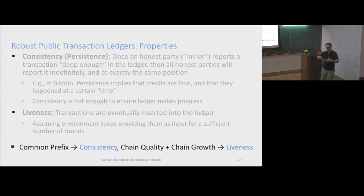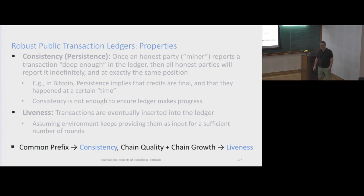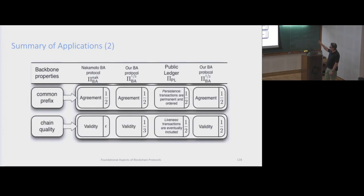This is how we specify the distributed ledger. We can show that consistency follows from common prefix and liveness follows from chain growth and chain quality. Chain growth intuitively gives us liveness. And that's how we obtain these properties.